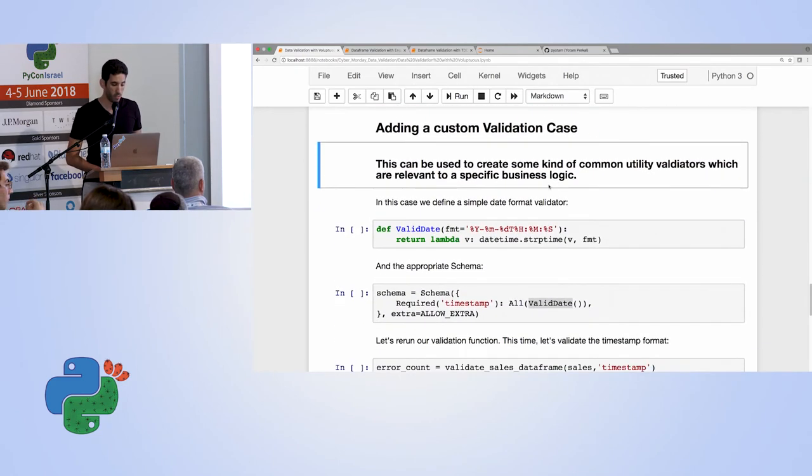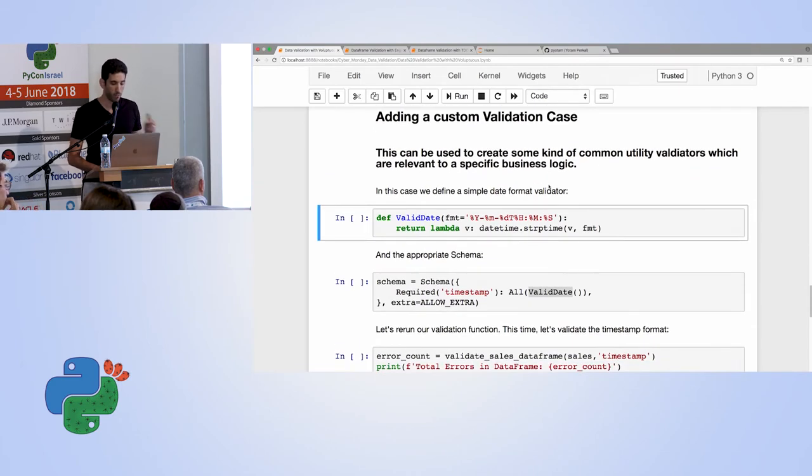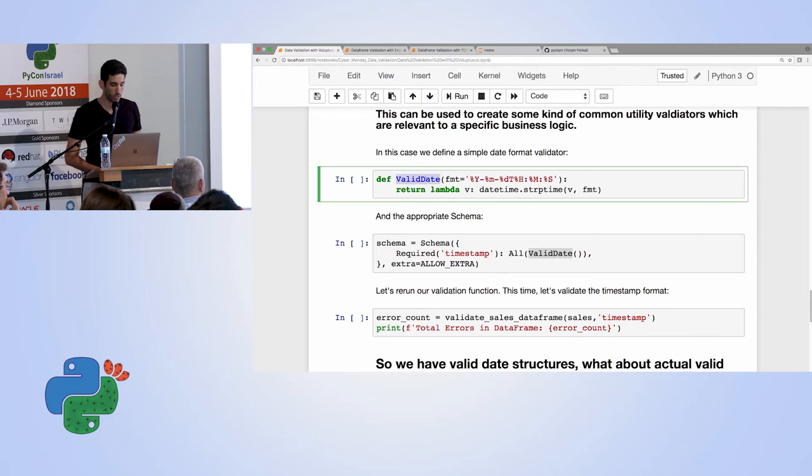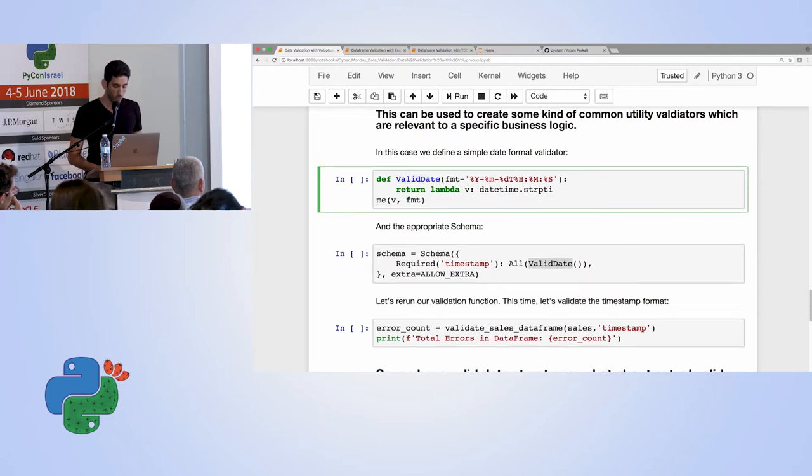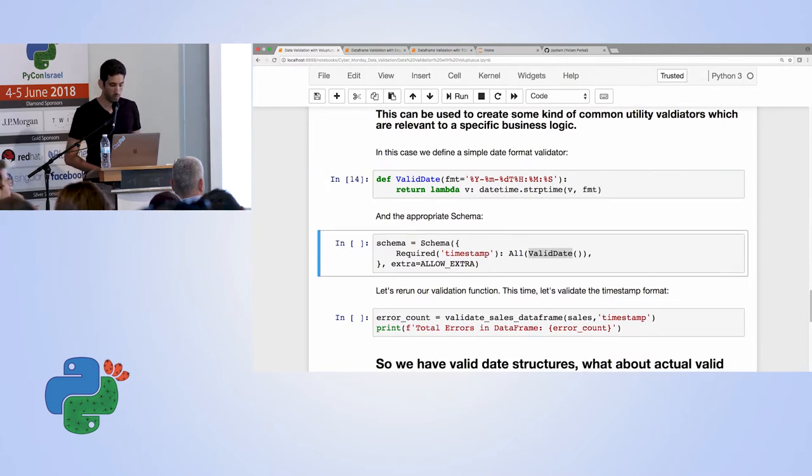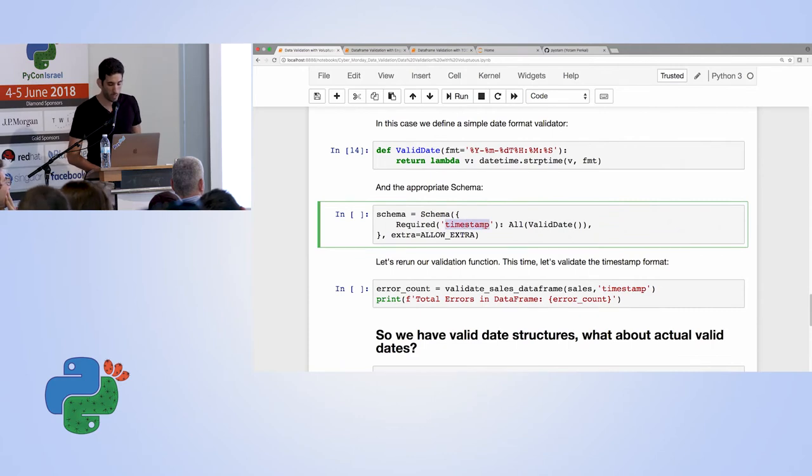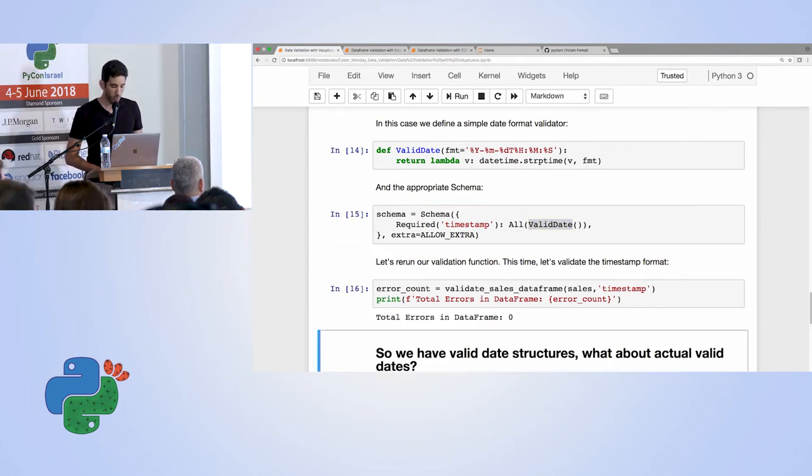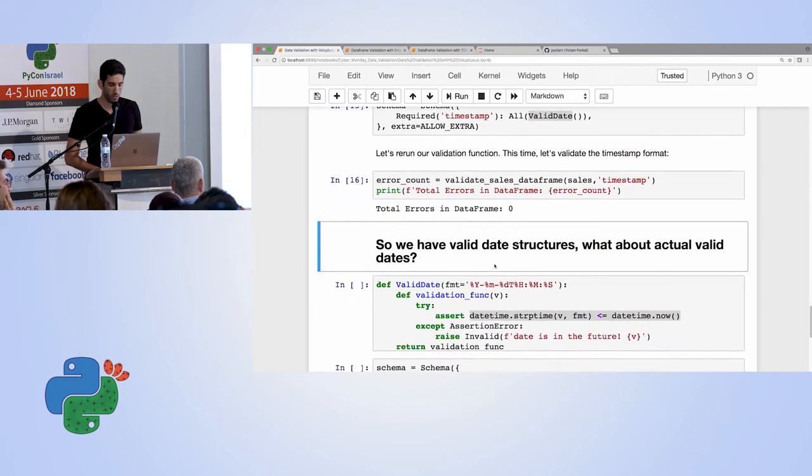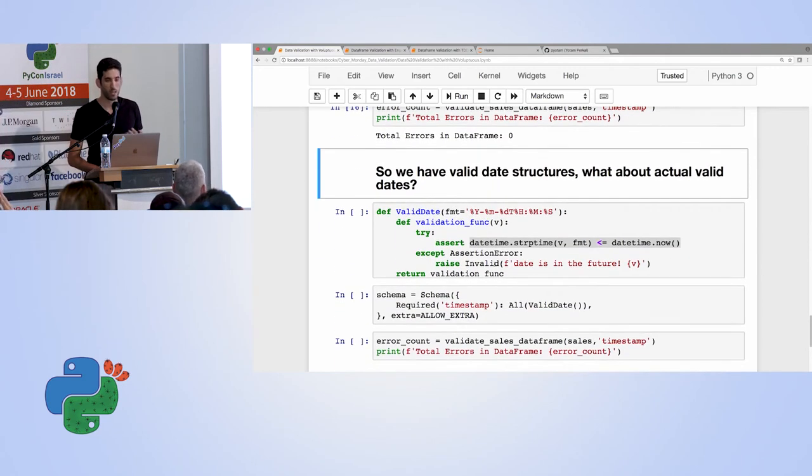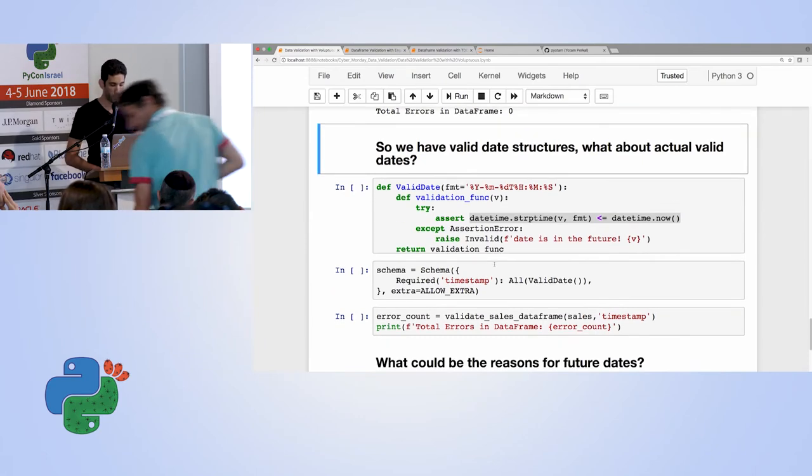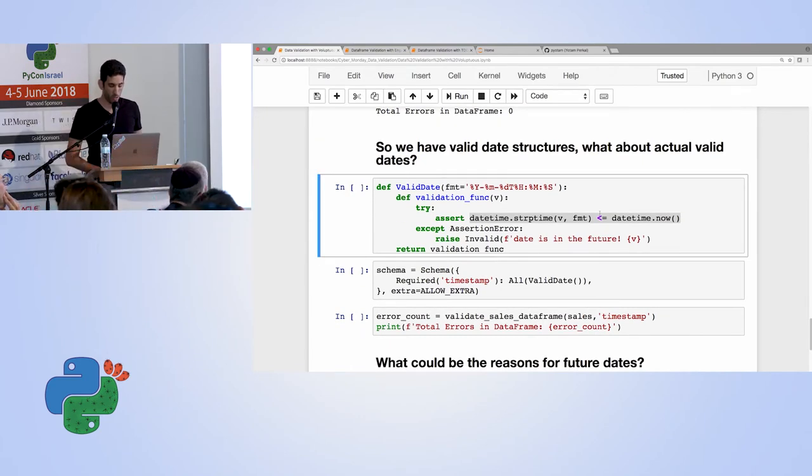Another strong capability that Voluptuous has is to create specific validation functions. In this case, it's a pretty simple function that validates the date format. And we run it. We run it in the same manner. We define our schema. This time I want to look at the timestamp field. And I want to validate every item against this validation function. When we run it, we see we don't get any errors, which is good. So this means we have the proper format. But what about the logic? This time I want to make sure that we don't have dates that are in the future. So I modified the function a bit. This time I'm looking to see that the current time is smaller than the, I'm sorry, the time in the data frame is smaller than the current time.